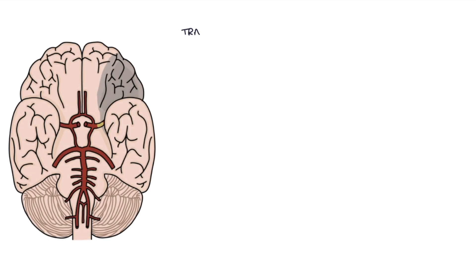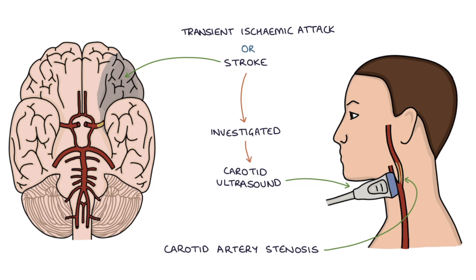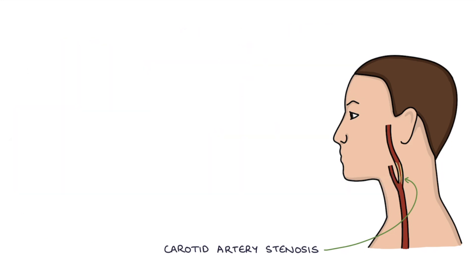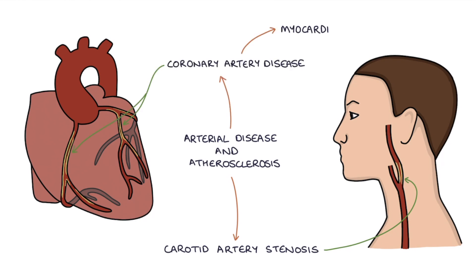Patients who have a transient ischemic attack or a stroke are investigated for carotid artery stenosis, usually with a carotid ultrasound scan. Patients with carotid artery stenosis are very likely to have arterial disease and atherosclerosis elsewhere, and are at high risk of coronary artery disease and myocardial infarction or heart attacks.